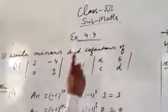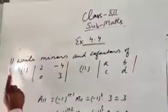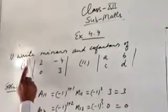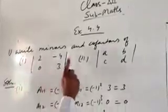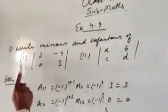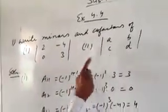Exercise 4.4, question number 1. Write the minors and cofactors of the given determinants.